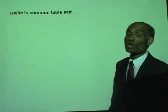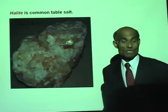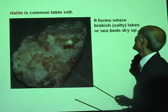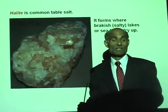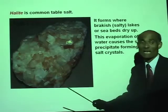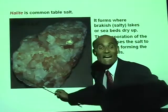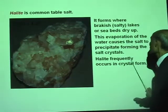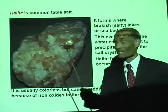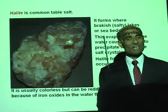Halide is common salt — table salt. It forms where brackish water, lakes, or seabeds dry up. The evaporation of the water causes the salt to precipitate. If you collect seawater in a flat bed and allow it to evaporate, what is left behind is halide — common salt. Halide frequently occurs in crystal form and is usually colorless, but can be reddish-brown because of iron oxide impurities in the water.